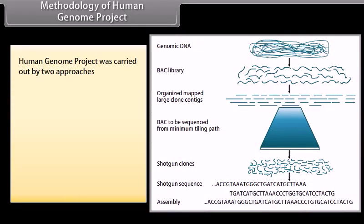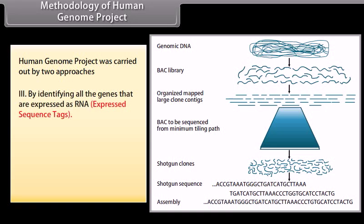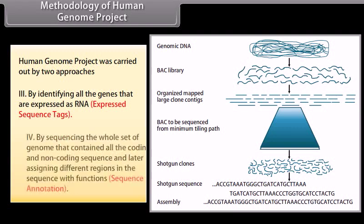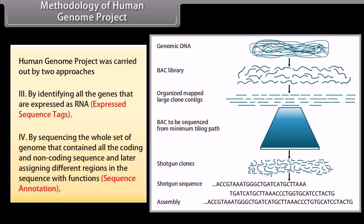Methodology of the Human Genome Project. The project was carried out by two approaches: by identifying all the genes that are expressed as RNA, known as expressed sequence tags; and by sequencing the whole set of genome containing all the coding and non-coding sequences and later assigning different regions in the sequence with functions.